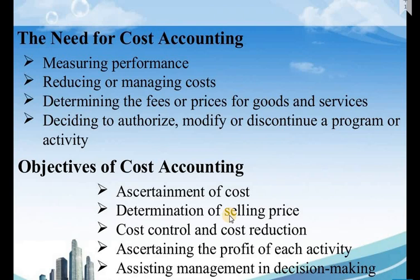Without cost accounting, if you want to take any decisions on price fixing for goods or services, it is a highly complicated task. The last reason is deciding to authorize, modify, or discontinue a program or an activity. For example, if an organization starts manufacturing a new product, firstly it should assess market conditions, secondly ascertain the cost involved, and thirdly decide whether to continue or discontinue the product or program.